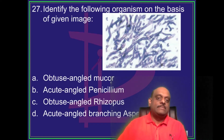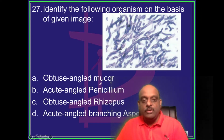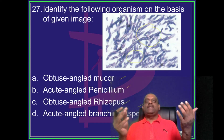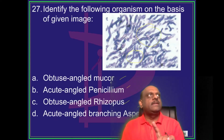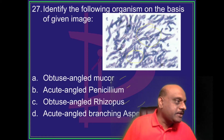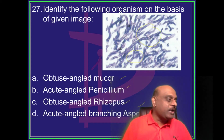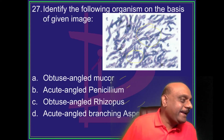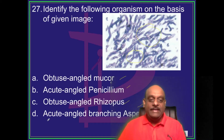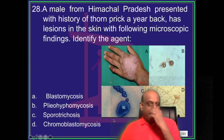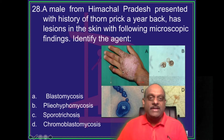Identify this organism from the given image. Is it Mucor, Penicillium, Rhizopus, or Aspergillus? Look at the branching angle — acute angle branching is visible. Sara Qaderi, Sudha Shukla, and others all correctly propose Aspergillus. Acute angle branching of Aspergillus is the key identifying feature.